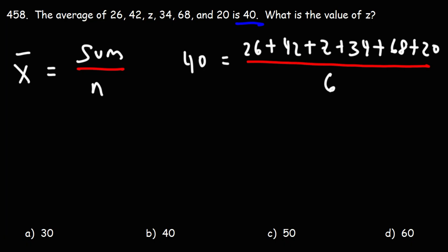So that's the equation we have. Let's solve for Z. To solve for Z, I recommend getting rid of the fraction by multiplying both sides by six.